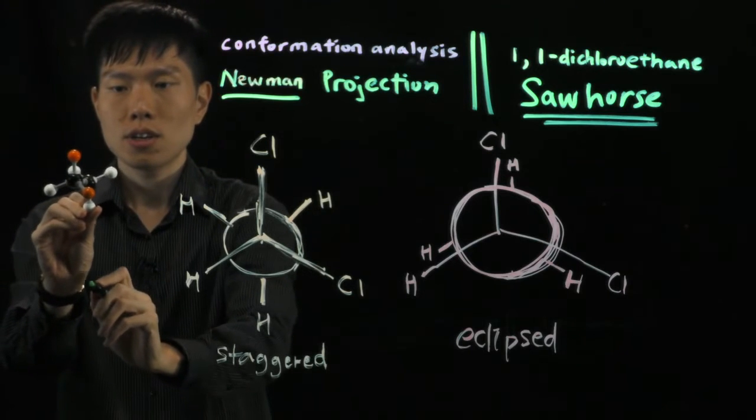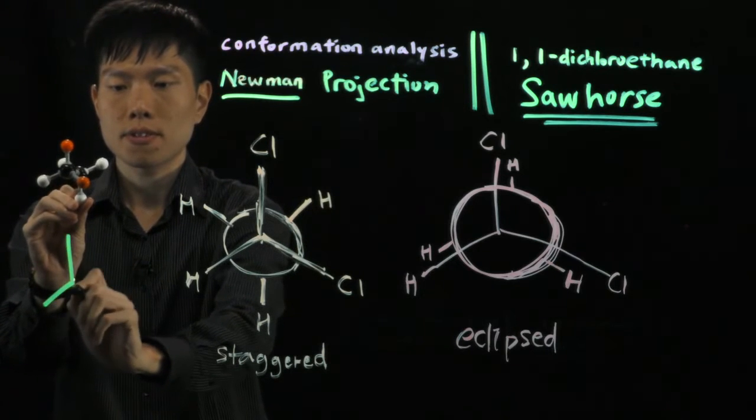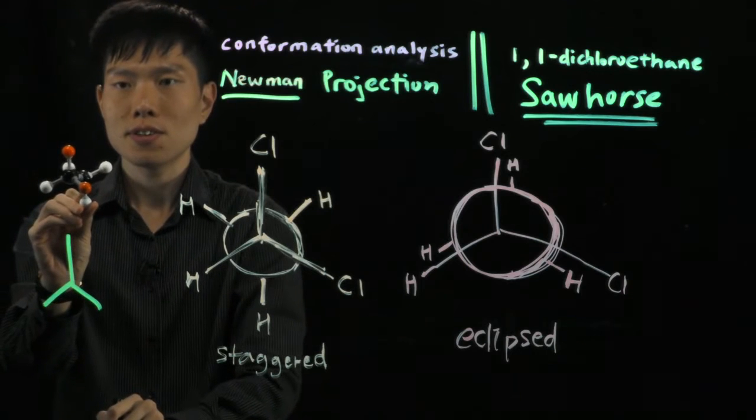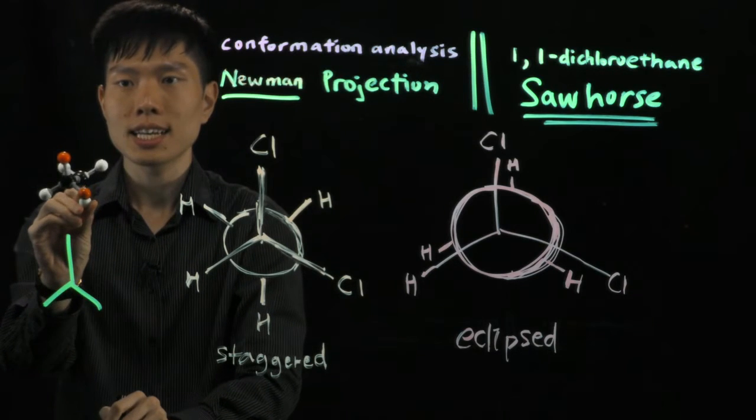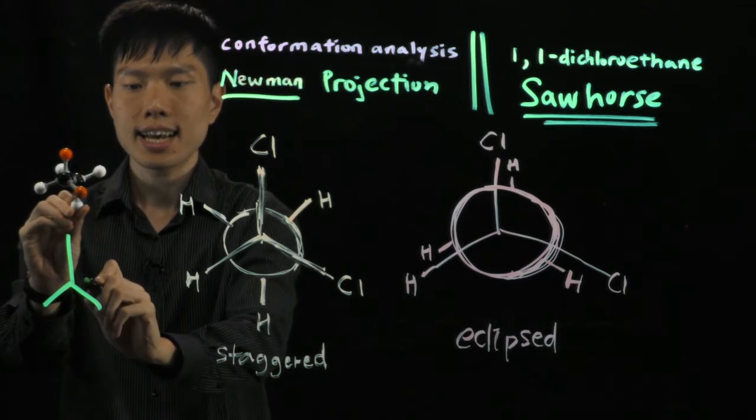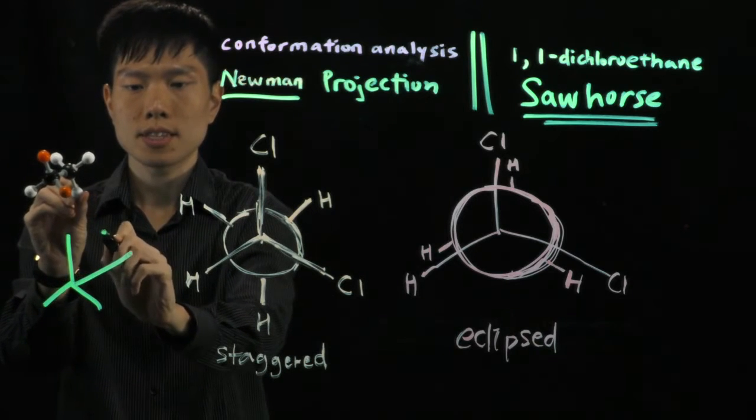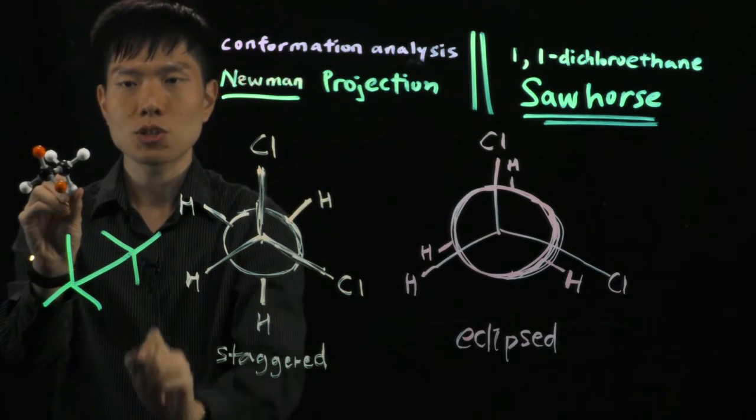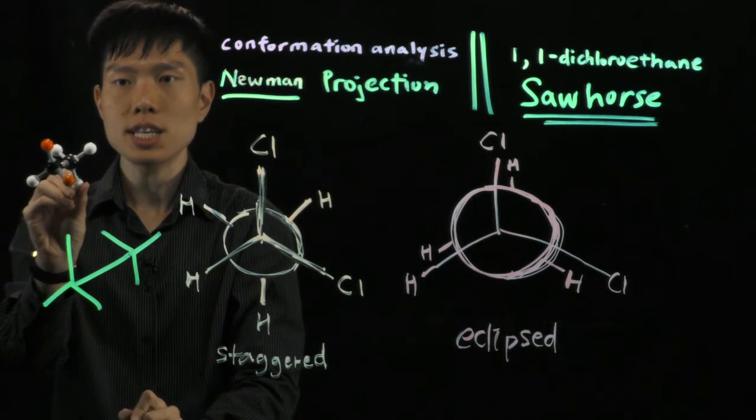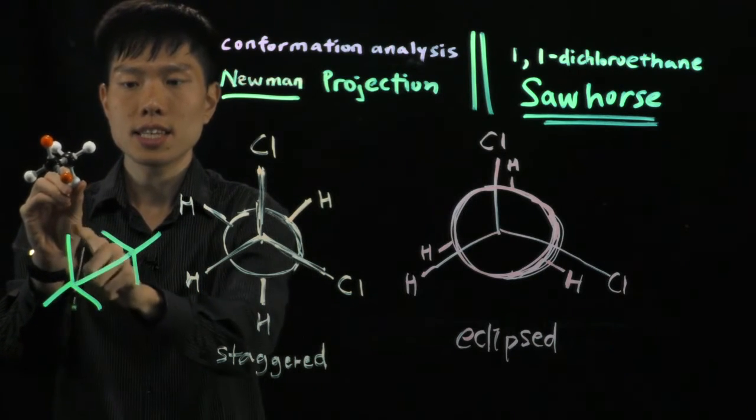So you will have this bond first for the front carbon, and then at the back, the opposite direction. So now you get the bonds here, and you insert the atoms.